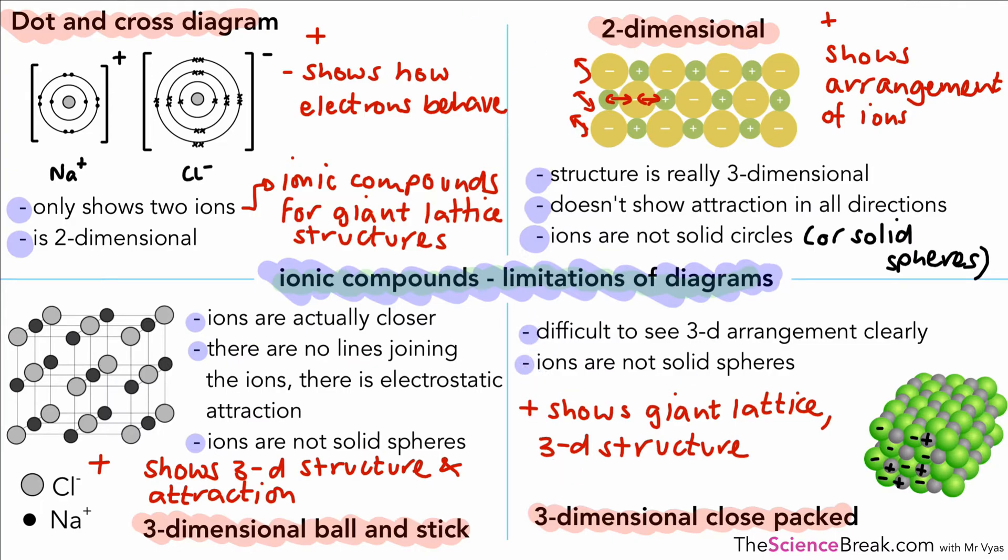The problem is it is quite difficult to see the 3D arrangement clearly. There's a lot of ions you can't see in that diagram, and again the ions are not solid spheres. So we've got various ways of representing ionic compounds, all the way from a dot and cross diagram to 3D structure showing how the ionic compounds are lattice structures and not just flat 2D structures. There are limitations, but we still have to use these models to understand how ionic compounds actually work and how they are structured.